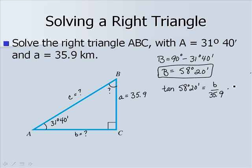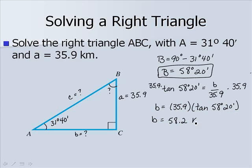We have that side b would be 35.9 times the tangent of 58 degrees 20 minutes. When we perform this multiplication, we get a value of side b of approximately 58.2 kilometers.